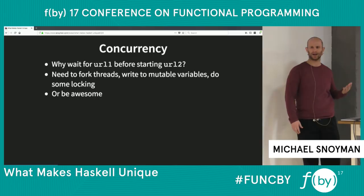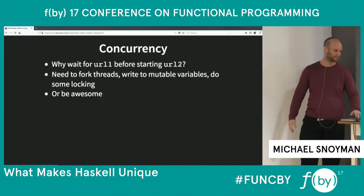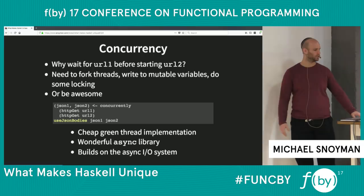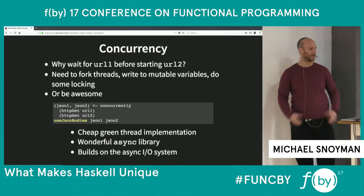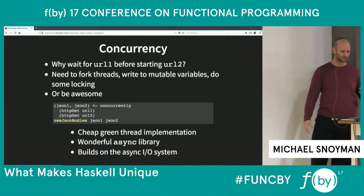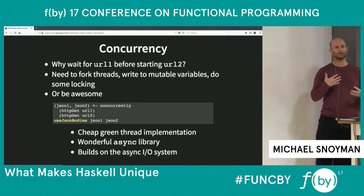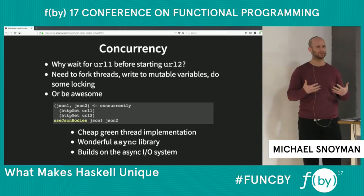If you start thinking about how you'd implement this, you're probably thinking about forking some threads, having some kind of locking variable to hold results — a whole bunch of things that sound very not Haskell-y. But in Haskell, we'd use this really nice function called `concurrently` from the async library. You tell `concurrently` the two things you want to run, and it takes care of all that business logic behind the scenes. It's built on top of Haskell's green thread implementation and the runtime's async I/O — the intersection of those two points lets us easily get concurrency and async I/O benefits.